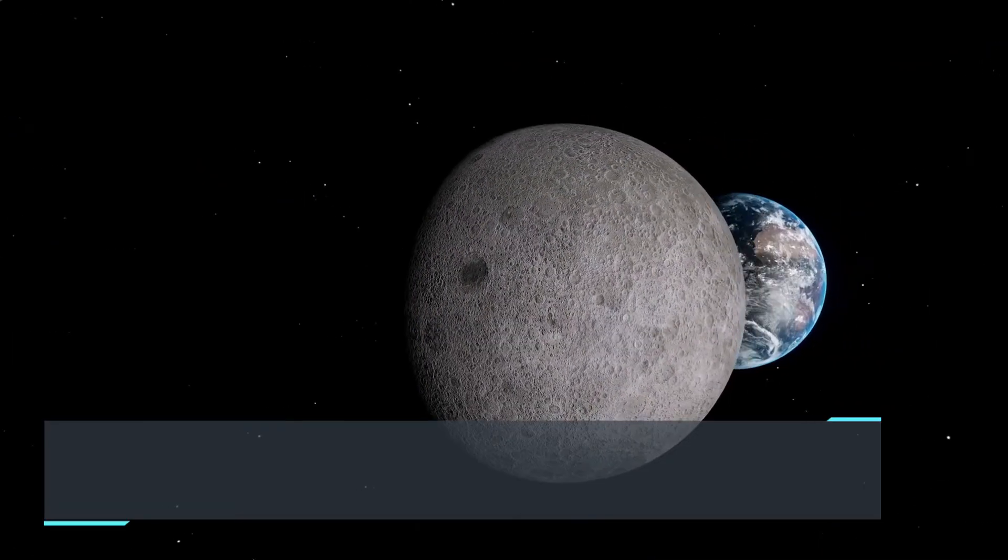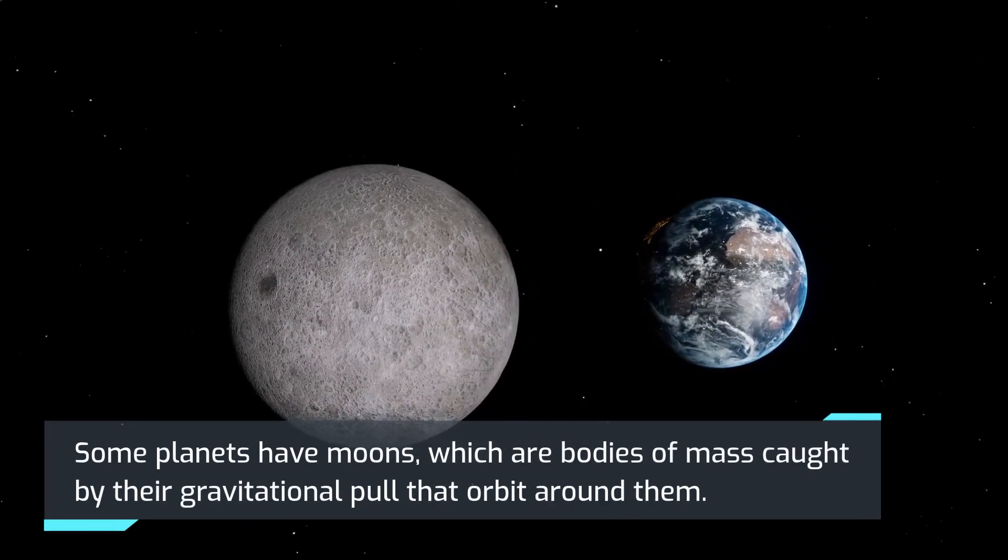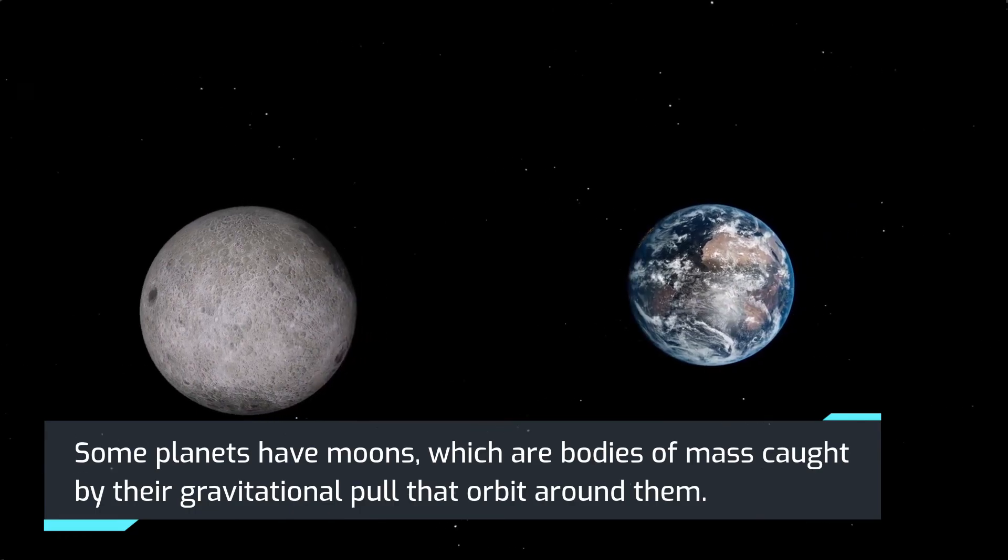Some planets have moons, which are bodies of mass caught by the gravitational pull that orbit around them.